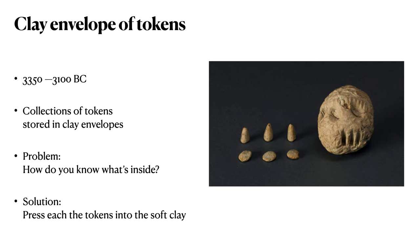In many cases, breaking the envelope open was not ideal, so the question arose: how do you know what's inside? The innovative solution was found in the tokens themselves. As the clay envelope was formed, while the clay was still soft, each individual token was pressed into the soft clay. The end result was that the clay envelope had an outside that could be read — containing three-dimensional impressions of each token held inside. By looking at the outside of the envelope, one could tell immediately what was inside. This was a major development.